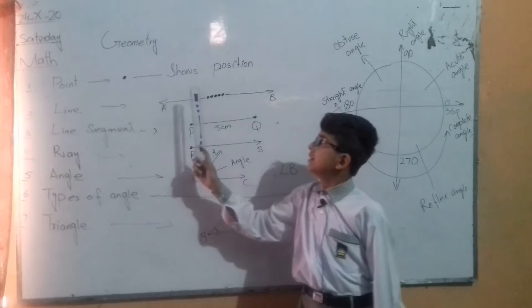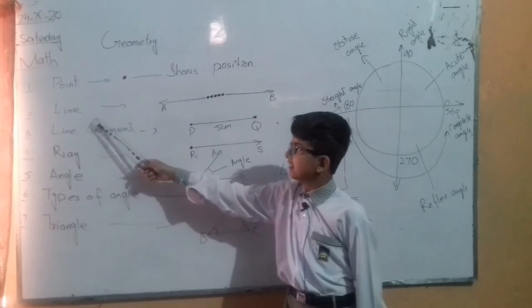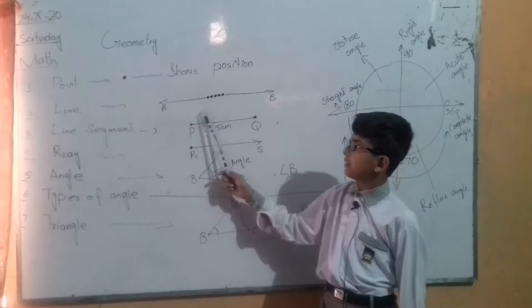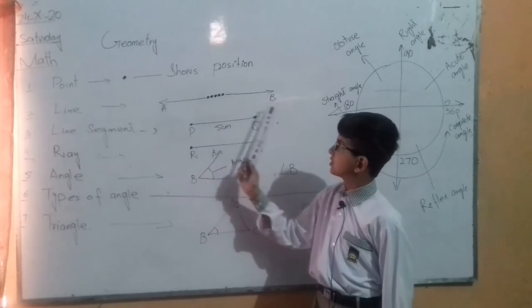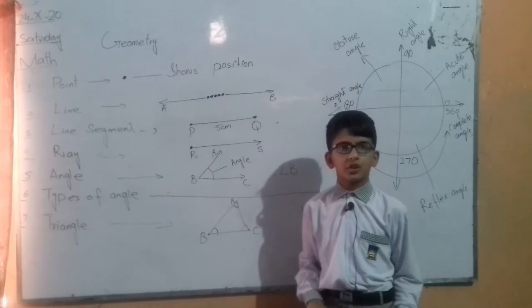Point. Point shows position. Line. Many points join to make a line. It goes to infinity and we cannot measure it.